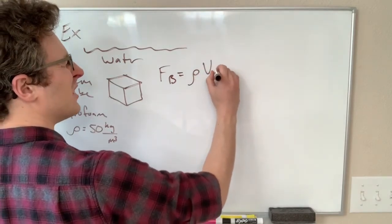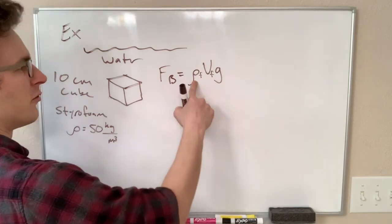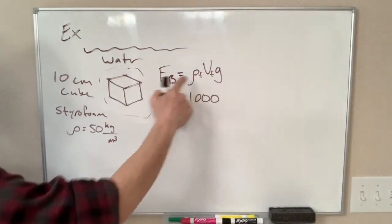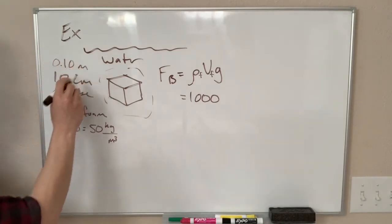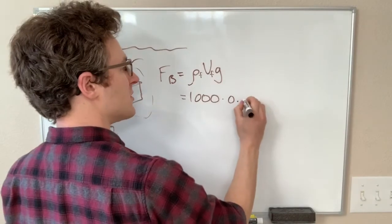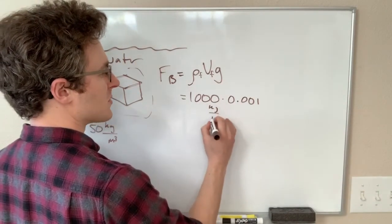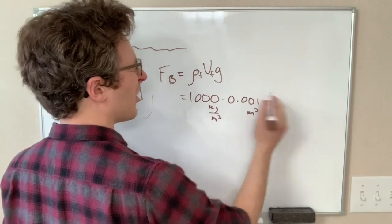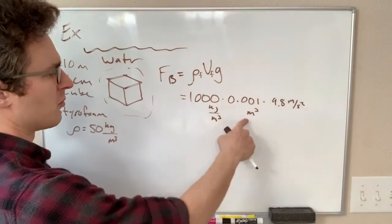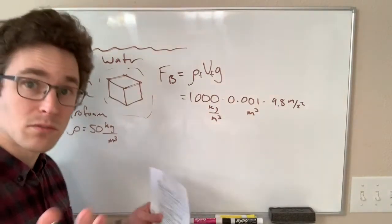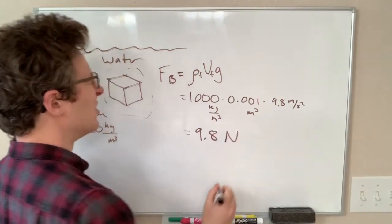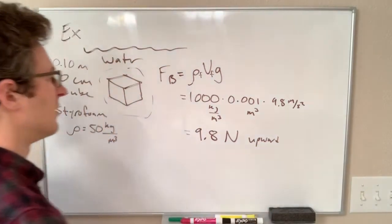We have F_b = rho × V × g. Our fluid density is the density of the water around the object, that is 1000 kg/m³. Our volume — a 10 centimeter cube is 0.1 meters on a side, so that is 0.1 × 0.1 × 0.1, giving a total volume of 0.001 cubic meters. Our gravitational acceleration is 9.8 m/s². The cubic meters cancel, giving us kilogram meters per second squared, which is newtons. So 1000 times 10⁻³ times 9.8 gives us 9.8 newtons of force in the upward direction.